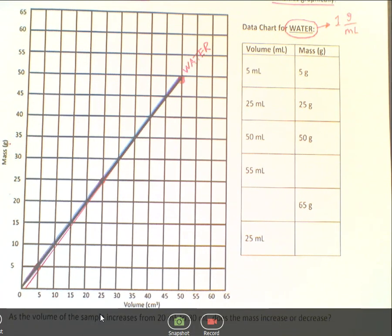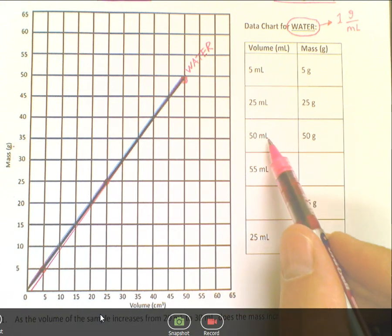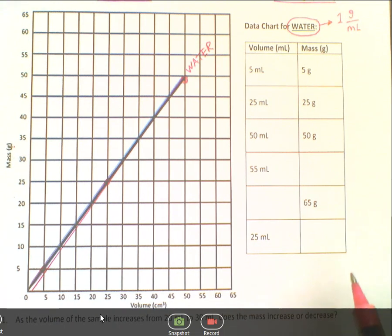And so the question asks, there's a few things. We're going to fill in the values here, and there's some questions down here that we're going to be doing. So first of all, if I said that you had 55 milliliters of water, can you figure out how much mass you would have?